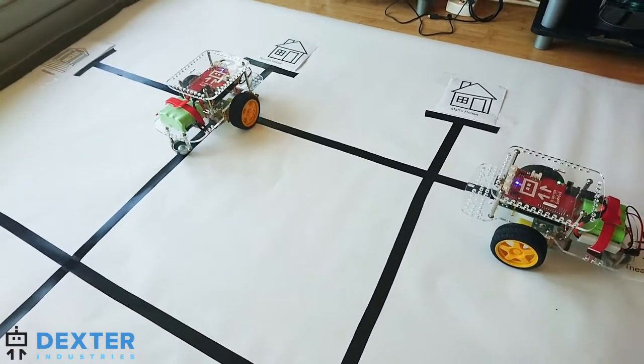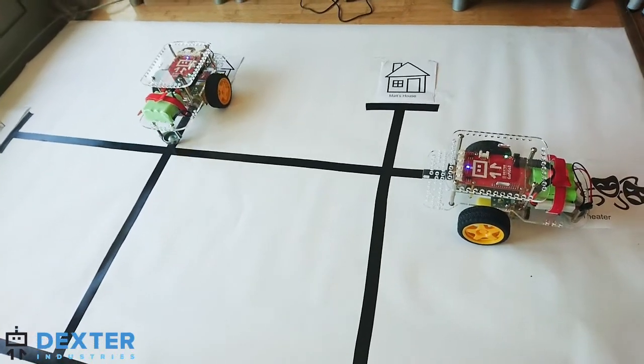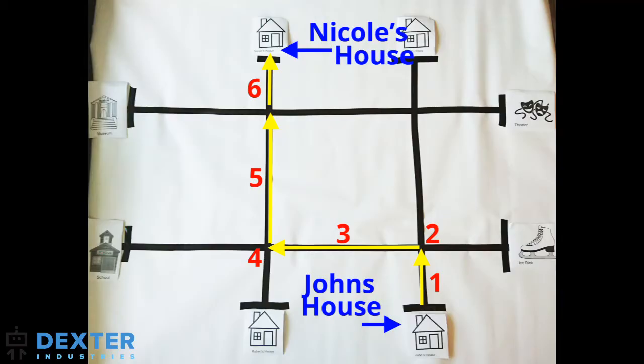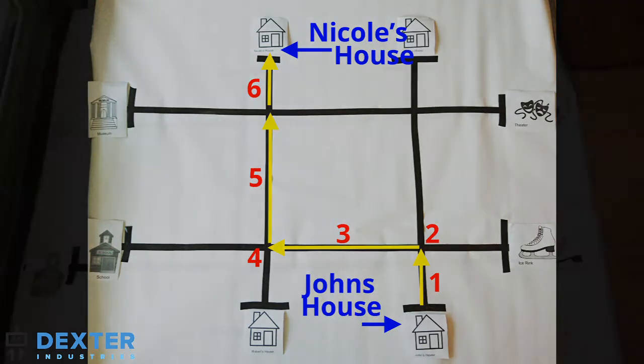In the second step, we build a function to tell the robot to stop when it sees other robots or cars on the road. Finally, we put it all together and give the robot directions on where to go.